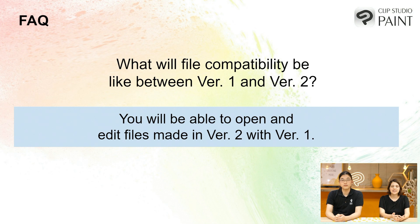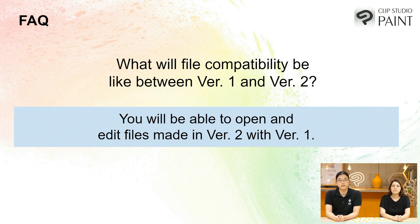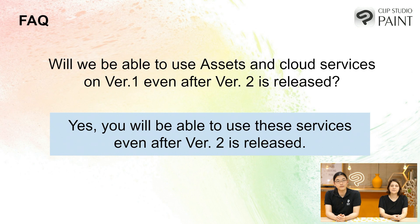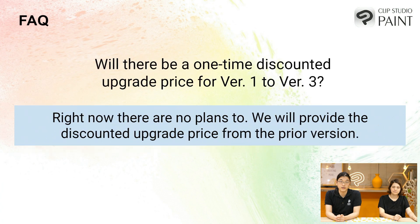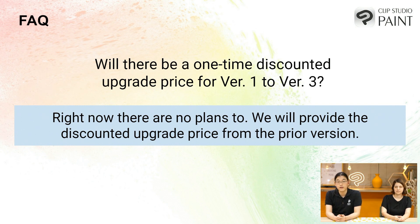After the announcement there were a lot of questions coming in from social media and various channels, so we're going to go through some questions we can answer today. First: what will file compatibility be like between version 1 and version 2? You will be able to open and edit files made in version 2 with version 1. Will you be able to use assets and cloud services on version 1 after version 2 is released? Yes. Will the discounted price for version 1.0 owners remain forever? You will be able to purchase a discounted upgrade while version 2.0 is on sale. Will there be a one-time discounted upgrade from version 1 to version 3? Right now we don't have plans to do so — we will provide the discounted upgrade price from the prior version.